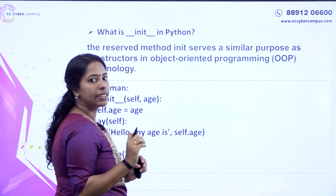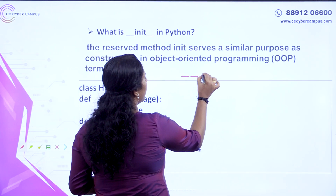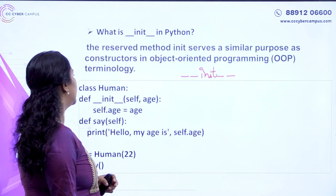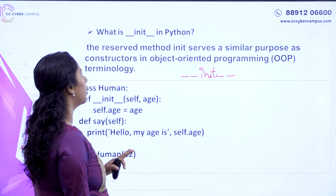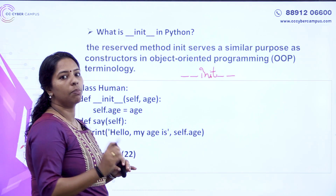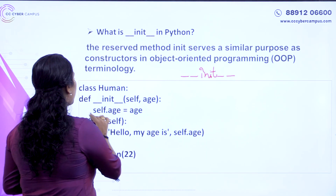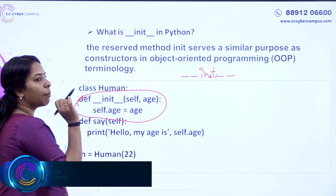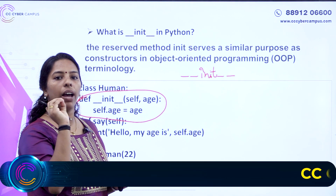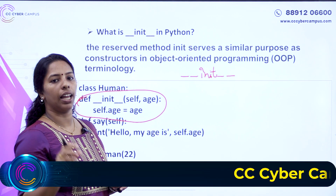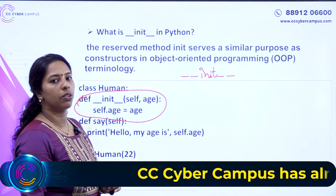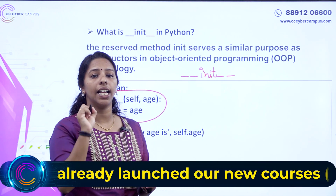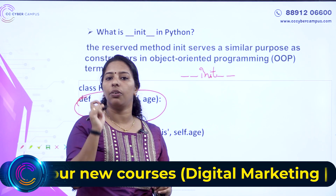What does the __init__ method do? The __init__ method is an initialization method. We will use the init method to initialize values in variables. We can use the initialization method to set up values when an object is created.